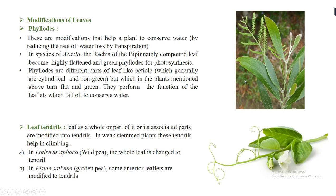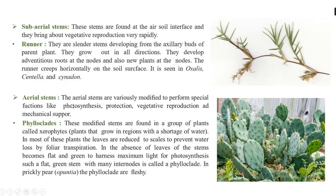Another leaf modification is leaf tendrils, where the leaf as a whole or part of it is modified into a tendril. These tendrils support climbing in weak-stemmed plants. Leaf tendrils are seen in Lathyrus (wild pea) and Pisum sativum (garden pea).